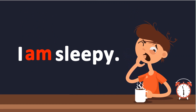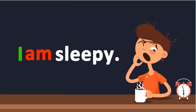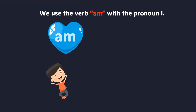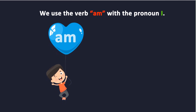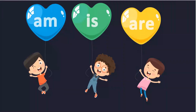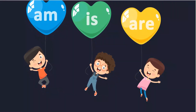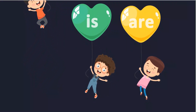What is the pronoun in this sentence? That's right! I is the pronoun that we use with the verb am. We use the verb am with the pronoun I. For example, I am bored. So we can say that we use am with the pronoun I.